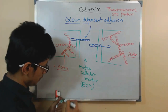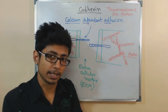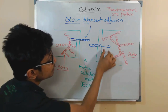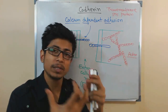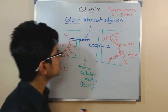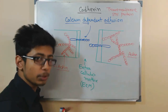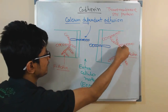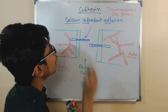Each cadherin has an intracellular unit and an extracellular unit. Using the intracellular unit, cadherin binds to actin. Using the extracellular unit, it interacts with the neighboring cadherin on the adjoining cell. So cadherin binds actin on one side and interacts with the neighboring cadherin on the other side, thereby holding the two cells together. That is the core function of cadherin.